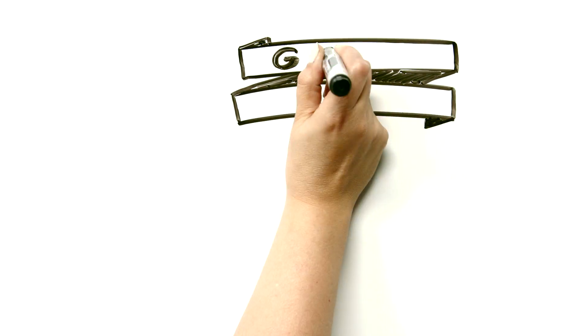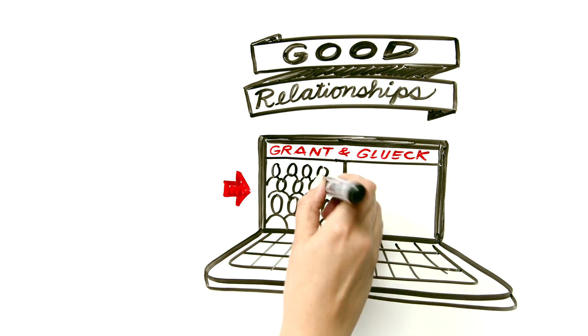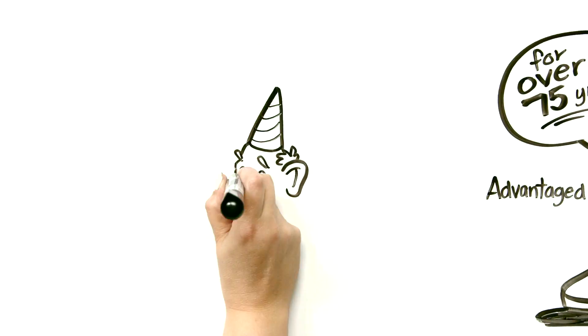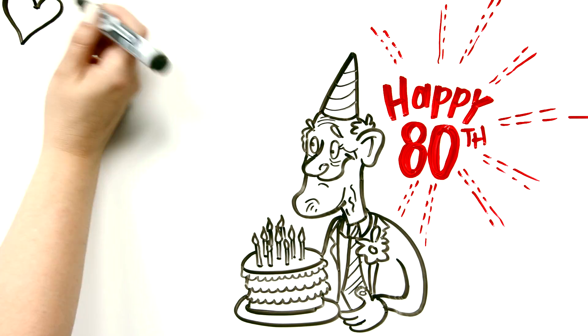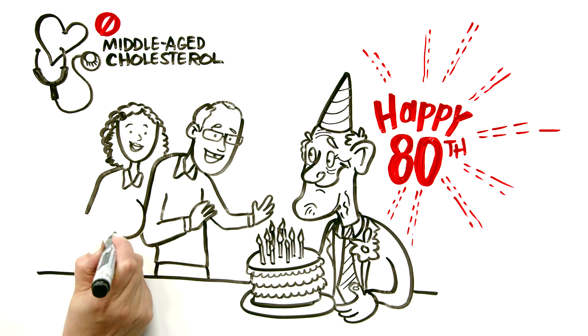Let's take one, having good relationships. The Grant and Gluick cohort trials have been following two groups of men, one advantage and one disadvantage, for over 75 years. And when they look to see what most predicted being a healthy, happy octogenarian, well, it wasn't middle-aged cholesterol. It was middle-aged satisfying connectedness to family, friends and community.